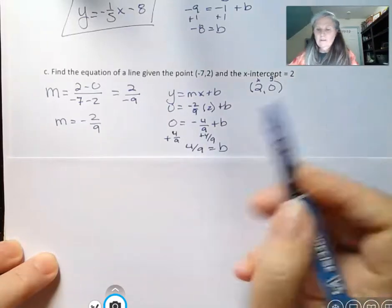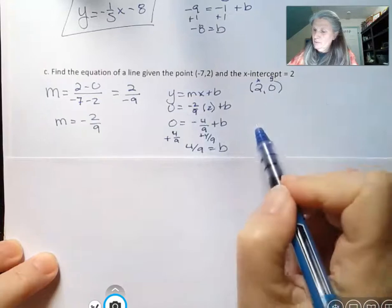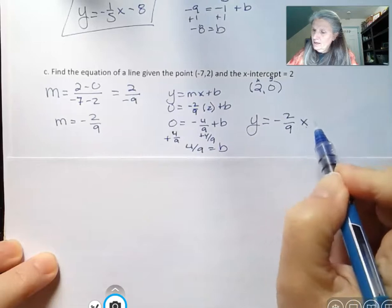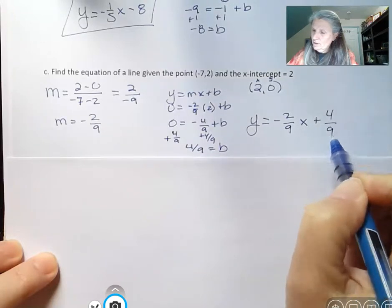So I found out what my slope was and I found out what my b is. And then y equals negative 2 ninths x plus 4 ninths.